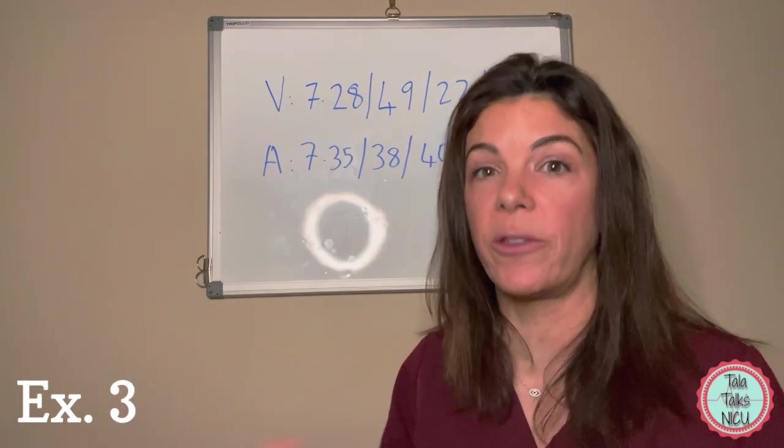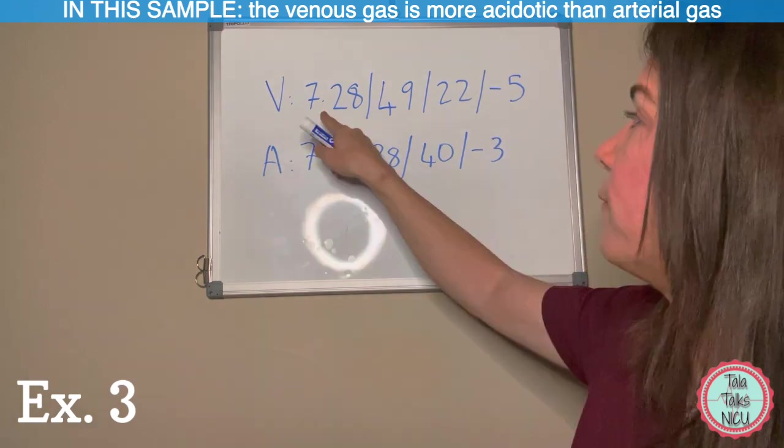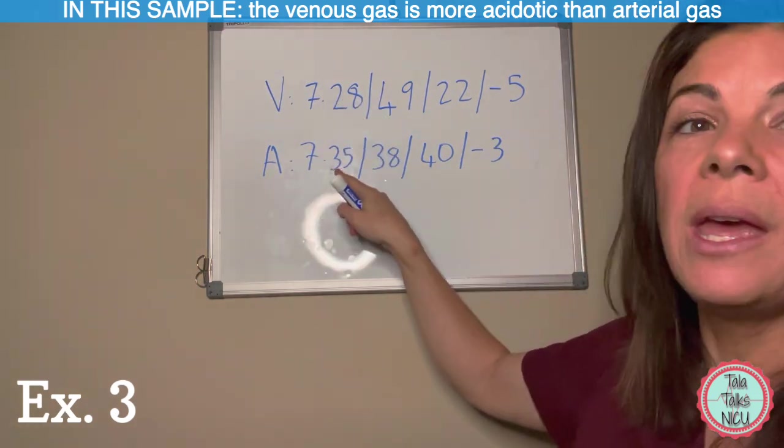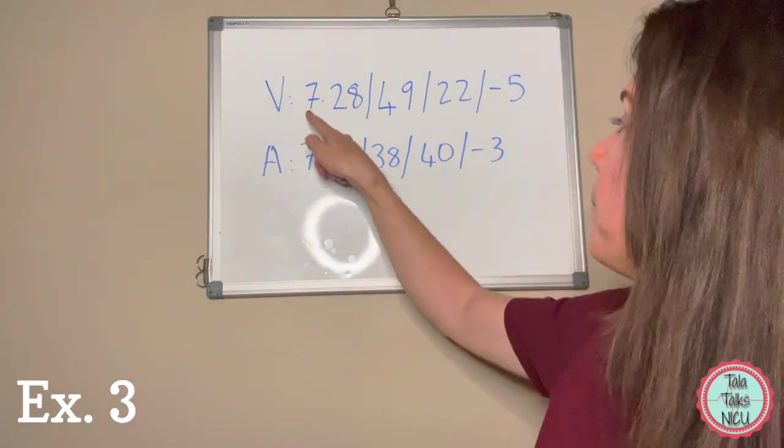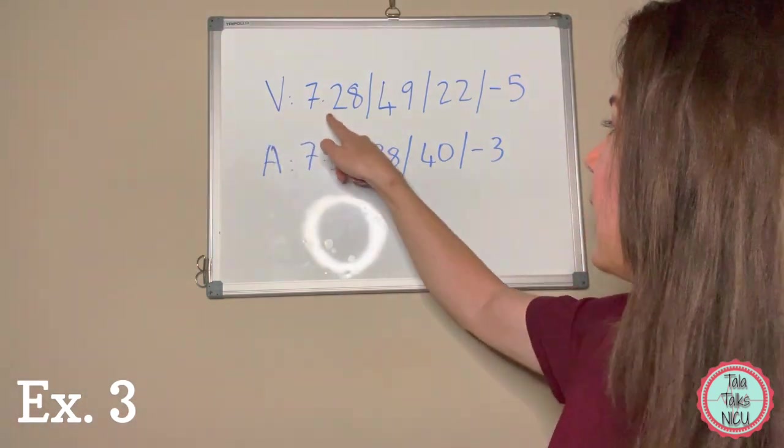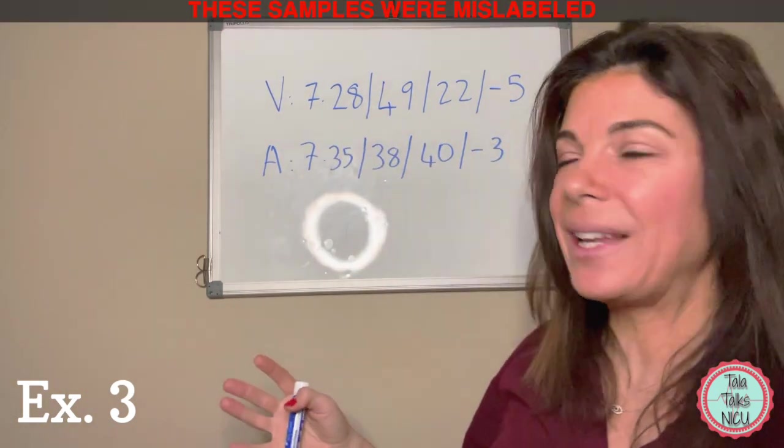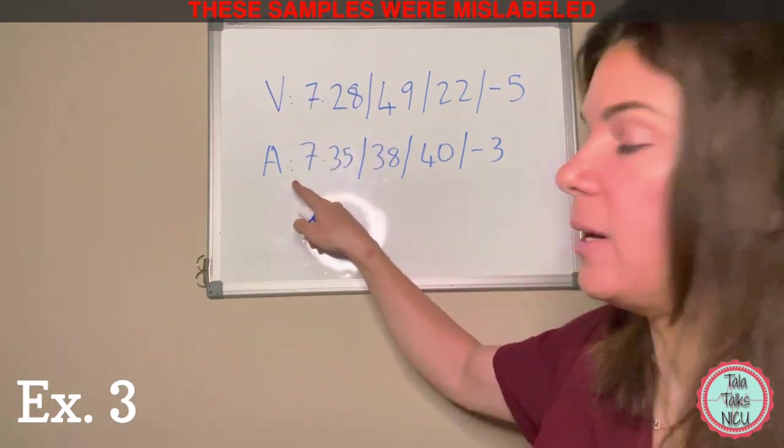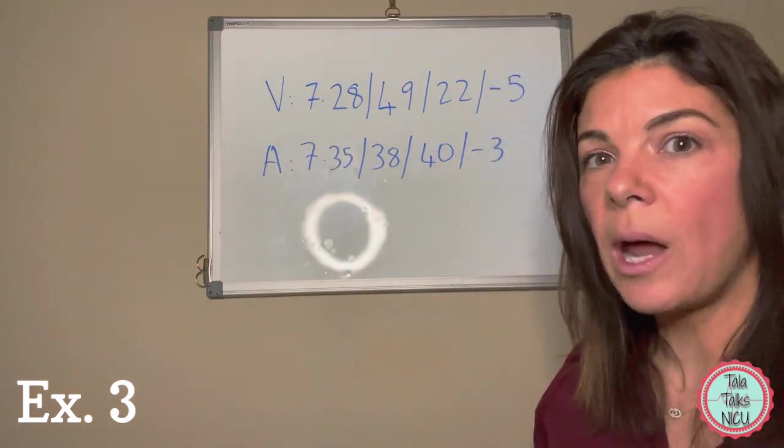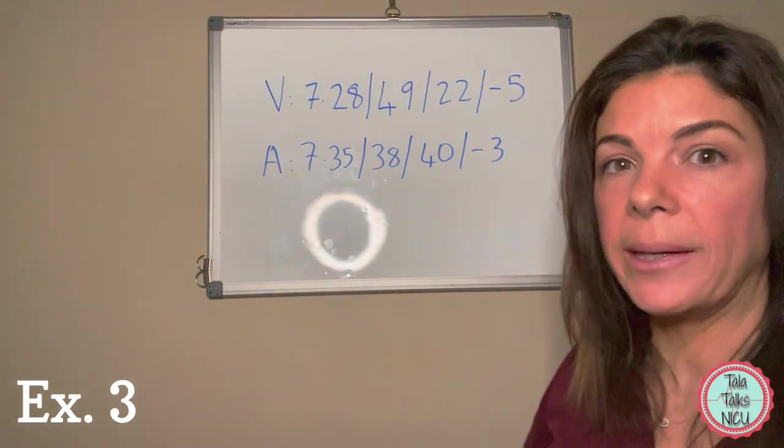Example number 3: the venous is 7.28, the arterial is 7.35. So they're different, which is good, so we probably appropriately got specimens from two different vessels. But as you can see, the venous is more acidotic than the arterial blood gas. The pH of the venous blood gas is lower and the base deficit is lower. Most likely these were just mislabeled, so really this is the arterial and this is the venous cord blood gas.